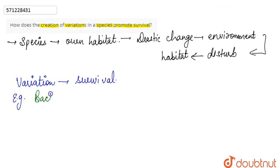Bacterias reproduce through asexual mode of reproduction, and that is why they all have the same genetic material. There are no variations among them.